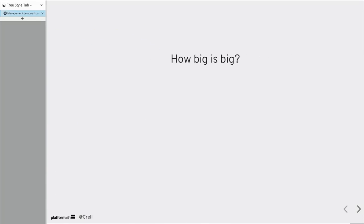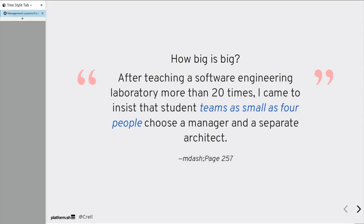One question here. We're talking about big systems. How big is big? After teaching a software engineering lab more than 20 times, I came to insist that student teams as small as four people choose a manager and separate architect. Four. Manager, architect, two implementers. Either the manager or the architect can be the boss. It works either way as long as everyone agrees on which is which. But those are separate jobs, even for a team as small as four.